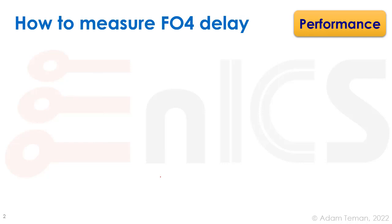We often use the fan-out-4 metric to say what a gate's delay is, normalized to the technology. So fan-out-4 delay means: if we take a gate and load it with something four times its size, what is the delay? That's a delay in fan-out-4 measurements, introduced by David Harris during his PhD at Stanford — one of the authors of a main VLSI design textbook.